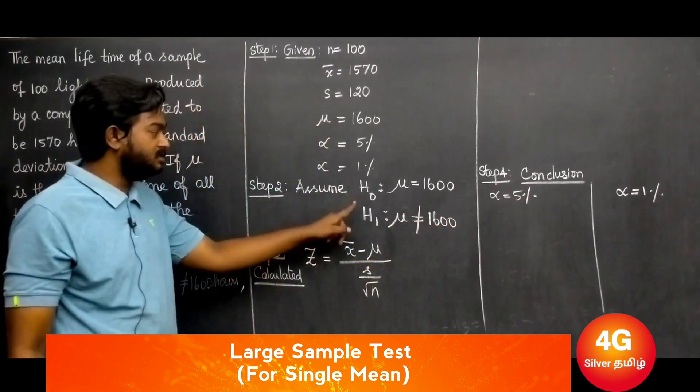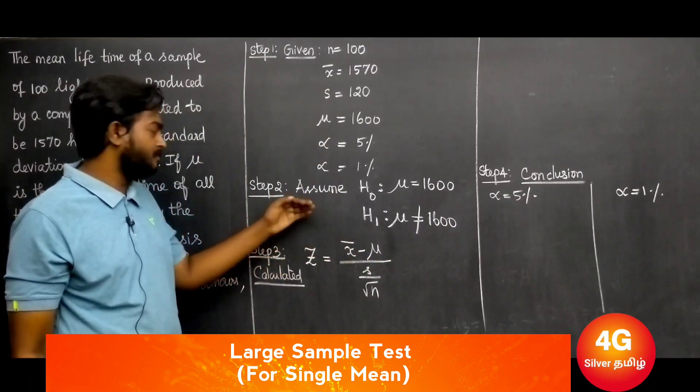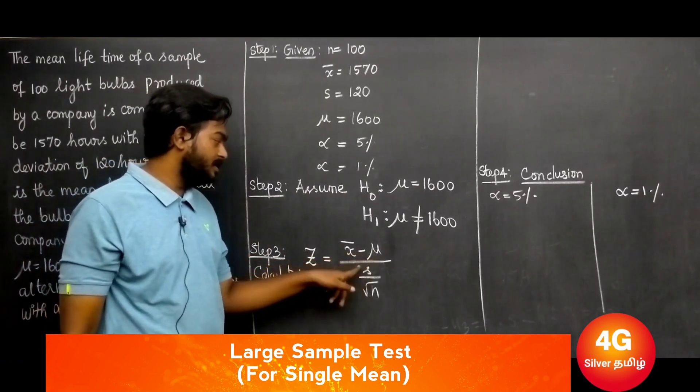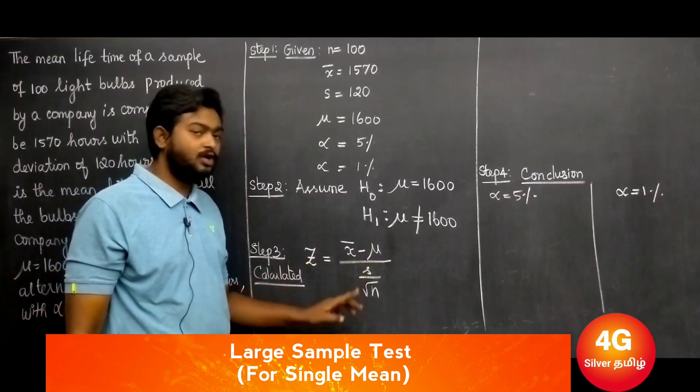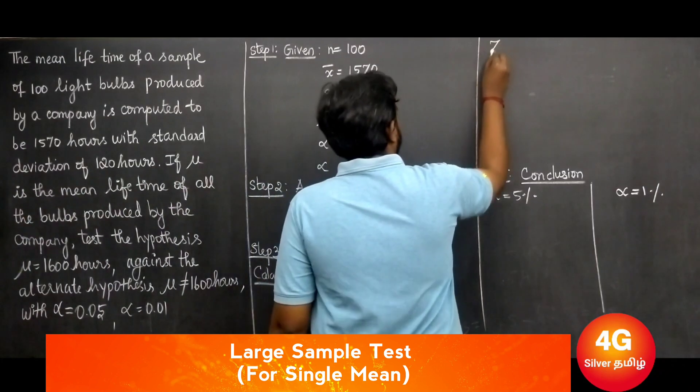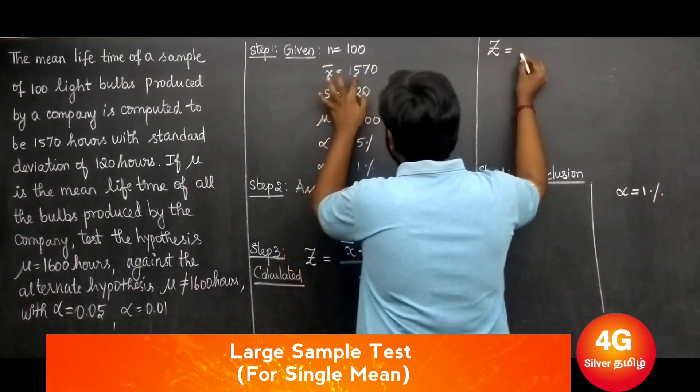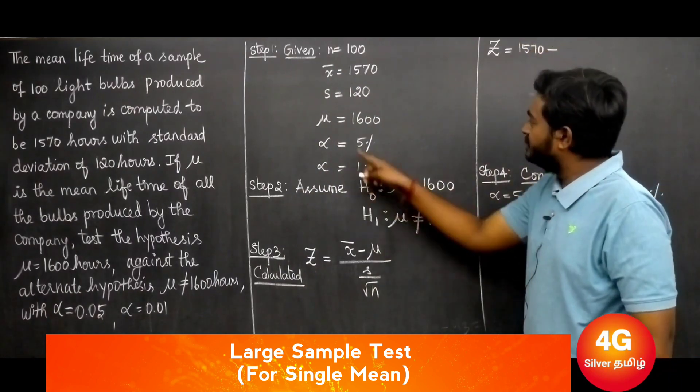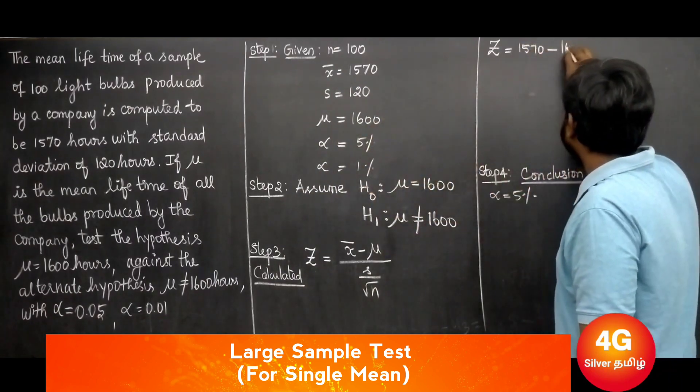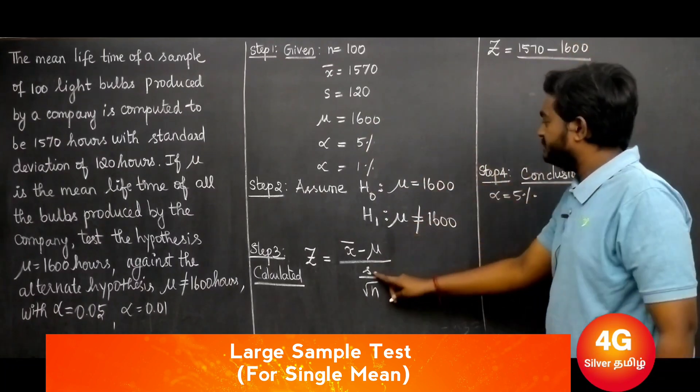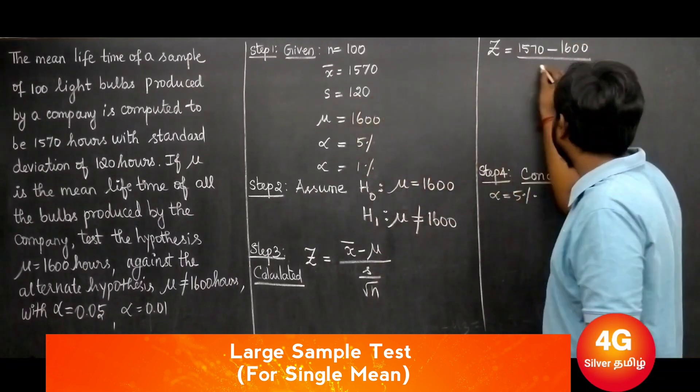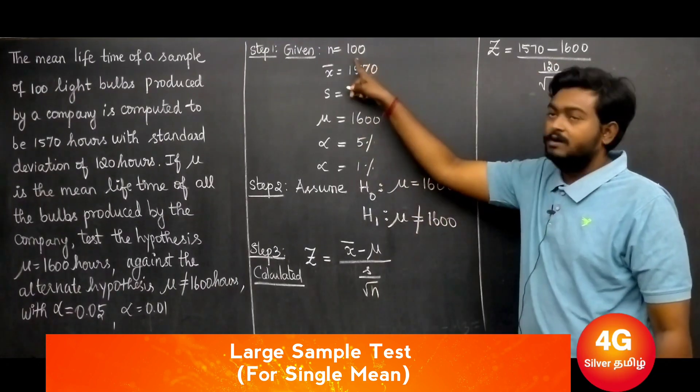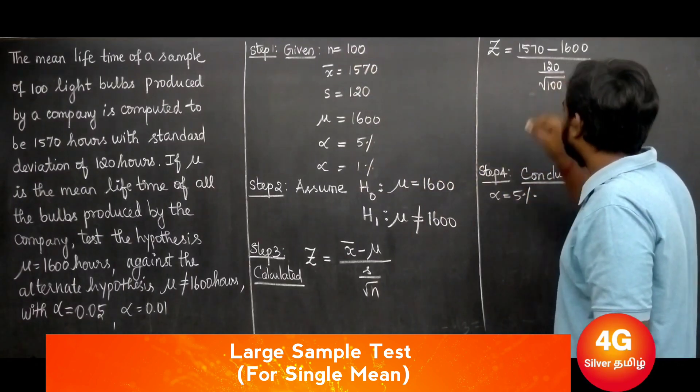The test statistic is z equals x̄ minus μ divided by s over square root of n. Applying the values: z equals 1570 minus 1600.